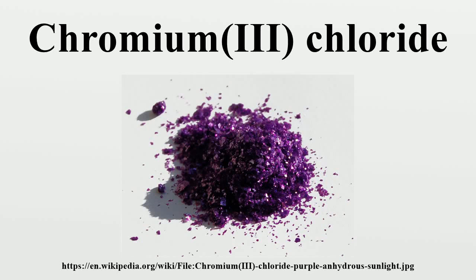Chromium chloride describes any of several compounds with the formula CrCl3·xH2O, where x can be 0, 5, and 6. The anhydrous compound with the formula CrCl3 is a violet solid. The most common form of the trichloride is the dark green hexahydrate, CrCl3·6H2O.